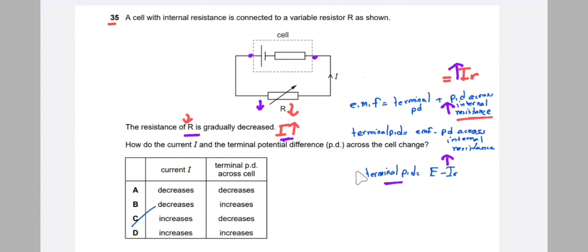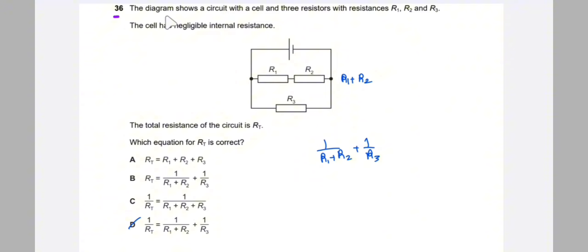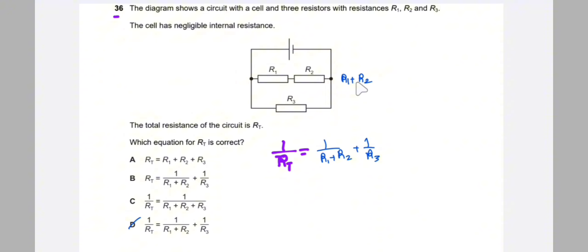Question 36: a circuit with a cell (negligible internal resistance) and three resistors R₁, R₂, R₃. R₁ and R₂ are in series, and this combination is in parallel with R₃. The total resistance equation is: 1/R_total = 1/(R₁ + R₂) + 1/R₃.